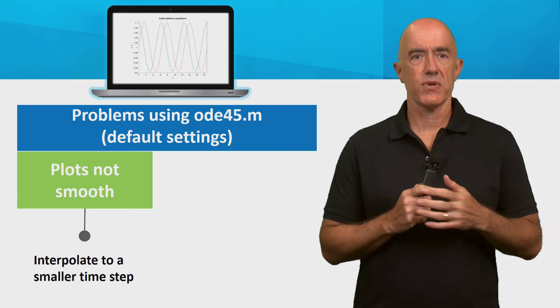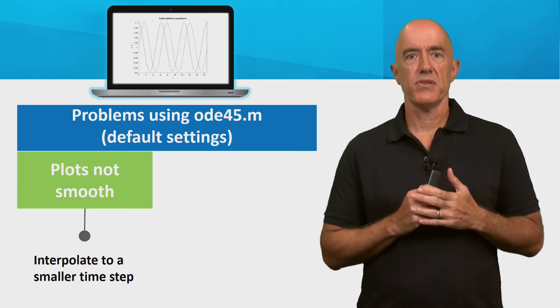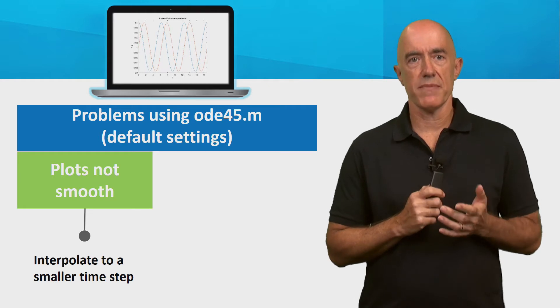First, the plots were not smooth. To make the plots smooth, we'll need to interpolate to a smaller time step.